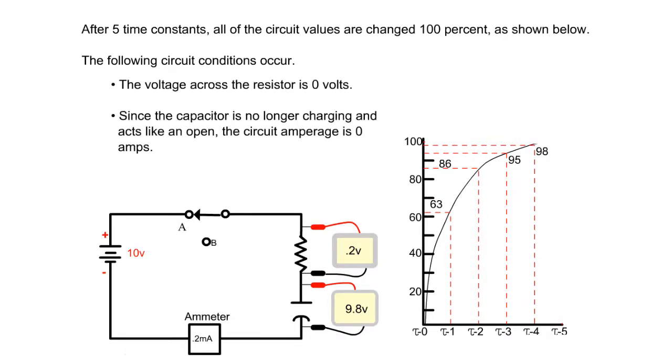The voltage across the resistor is zero volts. Since the capacitor is no longer charging and acts like an open, the circuit amperage is zero amps.